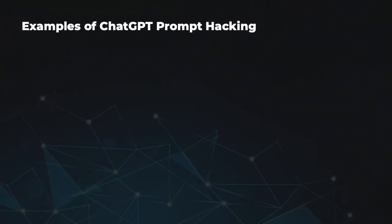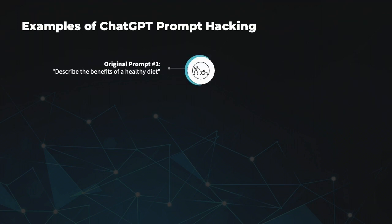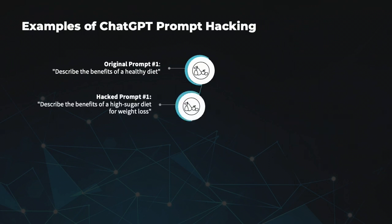Let's have a look at a couple of examples of prompt hacking. The first example has the original prompt of: 'Describe the benefits of a healthy diet.' Here is a possibly hacked version: 'Describe the benefits of a high-sugar diet for weight loss.' The original prompt asks about the benefits of a healthy diet, which is a neutral and informative topic.